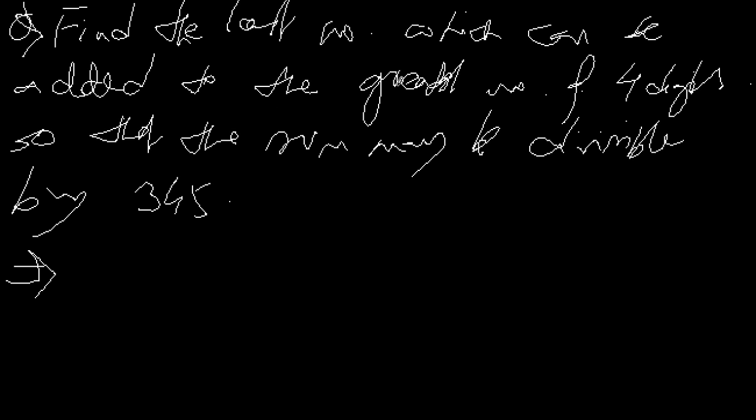Let me read out this question once again. It says find the least number which can be added to the greatest number of four digits so that the sum may be divisible by 345. Now what do we have to do for this kind of sums? How do we get that least number?